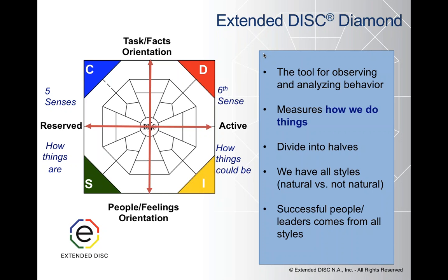How do we define successful people and leaders? We say they come from all styles. The ones that are most successful are the ones that have great self-awareness — they are confidently self-aware. They know their strengths and their areas where they need to develop. What takes them to that next level is the ability to modify their behavior to improve communication.